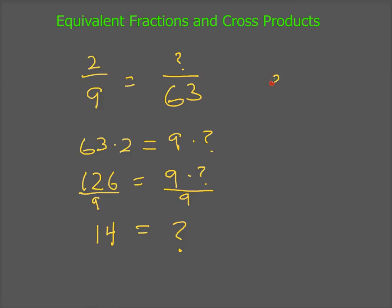And I end up with 14. So I can say that two-ninths is the same as 14 sixty-thirds. So that's how you find equivalent fractions using cross products. Not too overly taxing, but it's actually pretty useful in the end of all things in other realms as well.